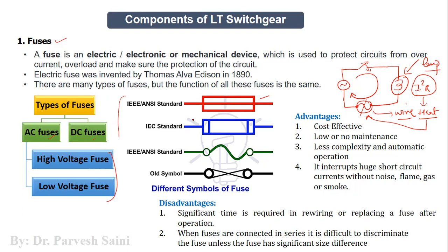There are certain advantages of a fuse: it is cost effective, very cheap, has very low cost, and generally needs no maintenance or very low maintenance. It is a low-complexity device and has automatic operation — as soon as the temperature reaches the melting point of the wire, the wire melts down automatically without any manual intervention.